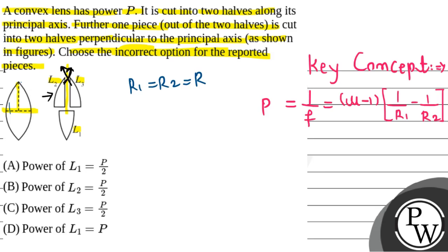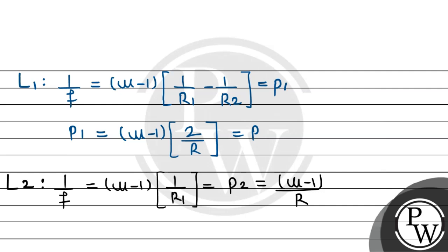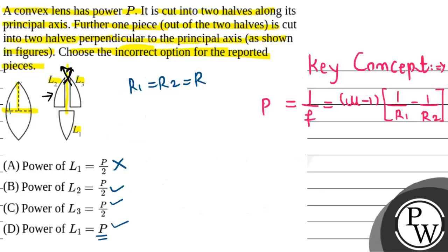So checking the options: L2 has power P/2 — correct. L3 has power P/2 — correct. L1 power being P is correct. But the option stating L1 has power P/2 is incorrect, because L1's power is actually equal to P. Therefore, option A is the incorrect option and is the answer to this question.